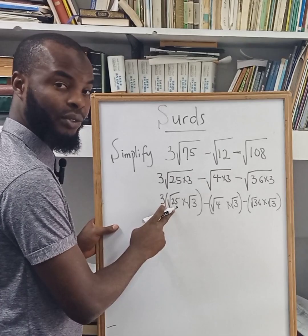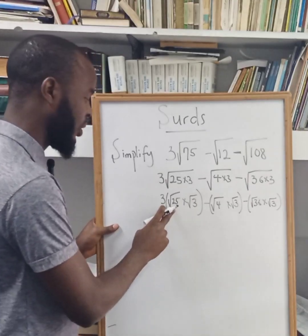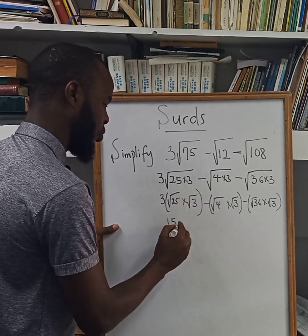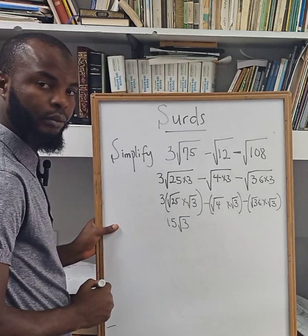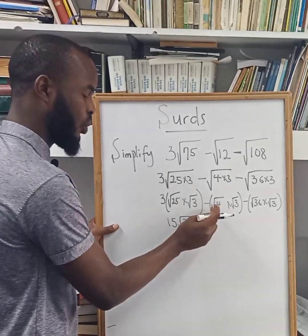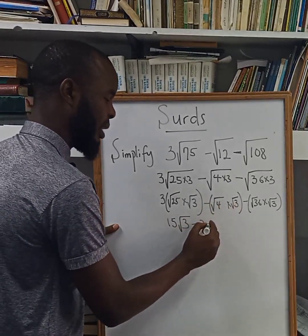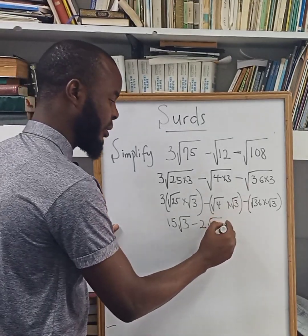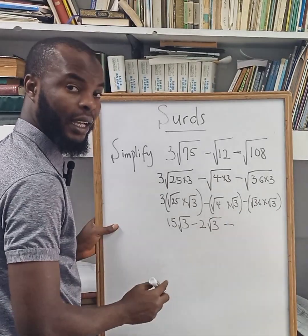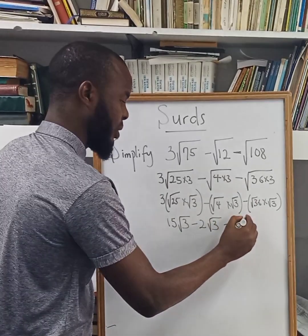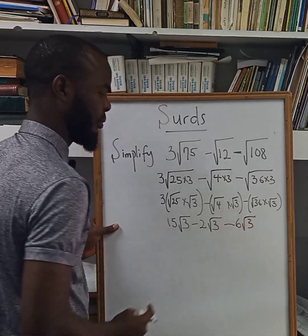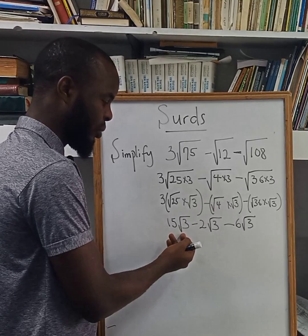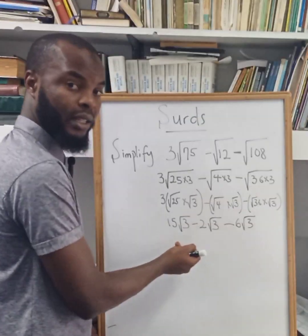The square root of 25 is 5, so multiplied by 3 we have 15 root 3. In this case, the square root of 4 is 2, multiplied by root 3, giving us 2 root 3. Then minus: the square root of 36 is 6, multiplied by root 3, giving us 6 root 3. We can see that root 3 is common to all three terms.